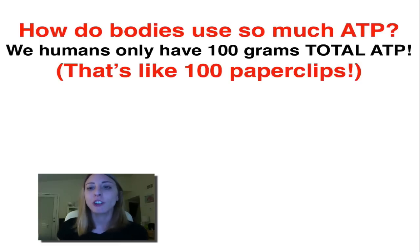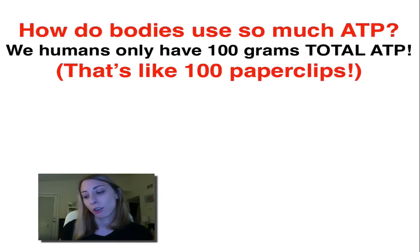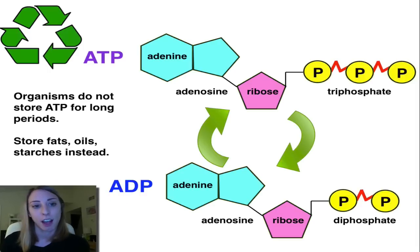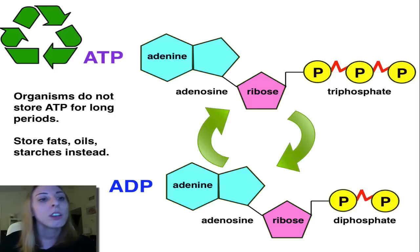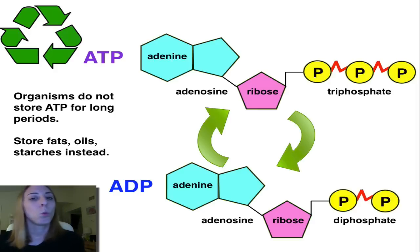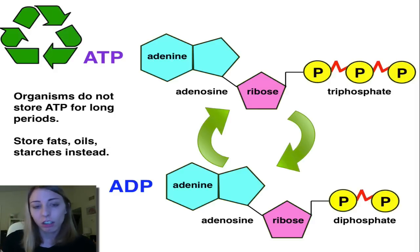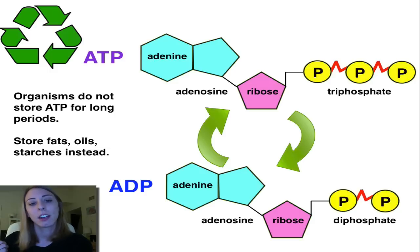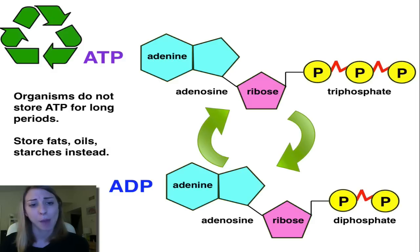So how do we get to use so much ATP if we only have a hundred grams total at one time? Well, of course we have to recycle. ATP actually can't be stored for very long, so we have to recycle that molecule over and over again.